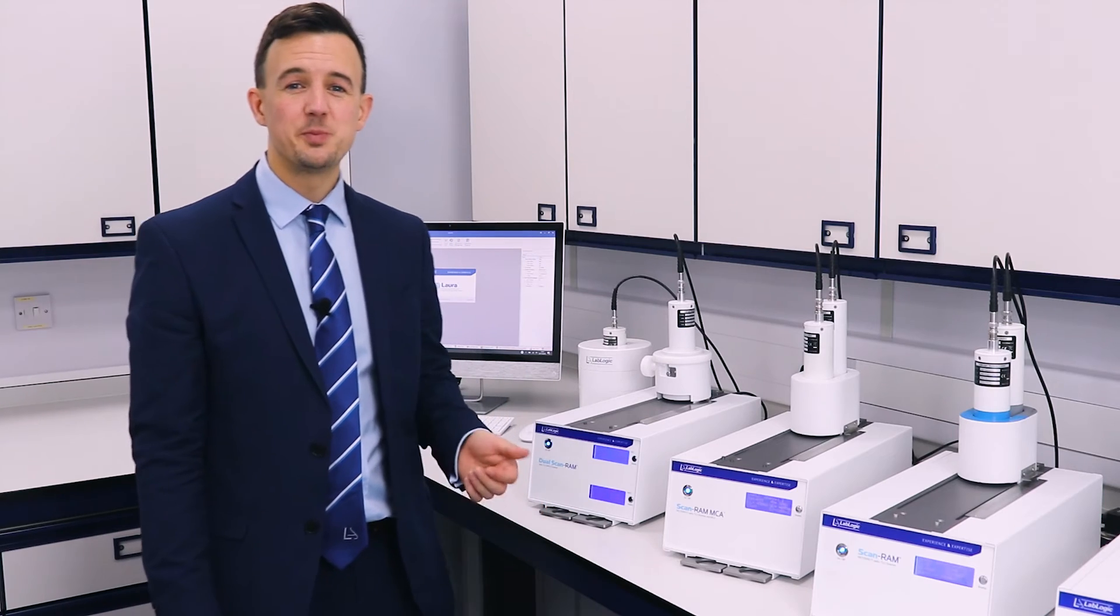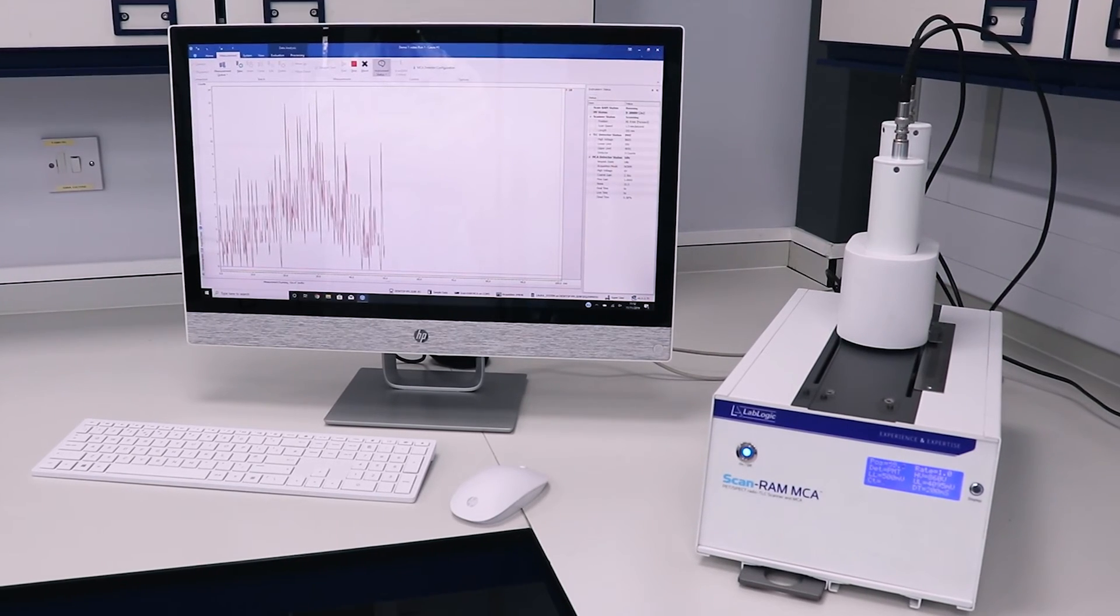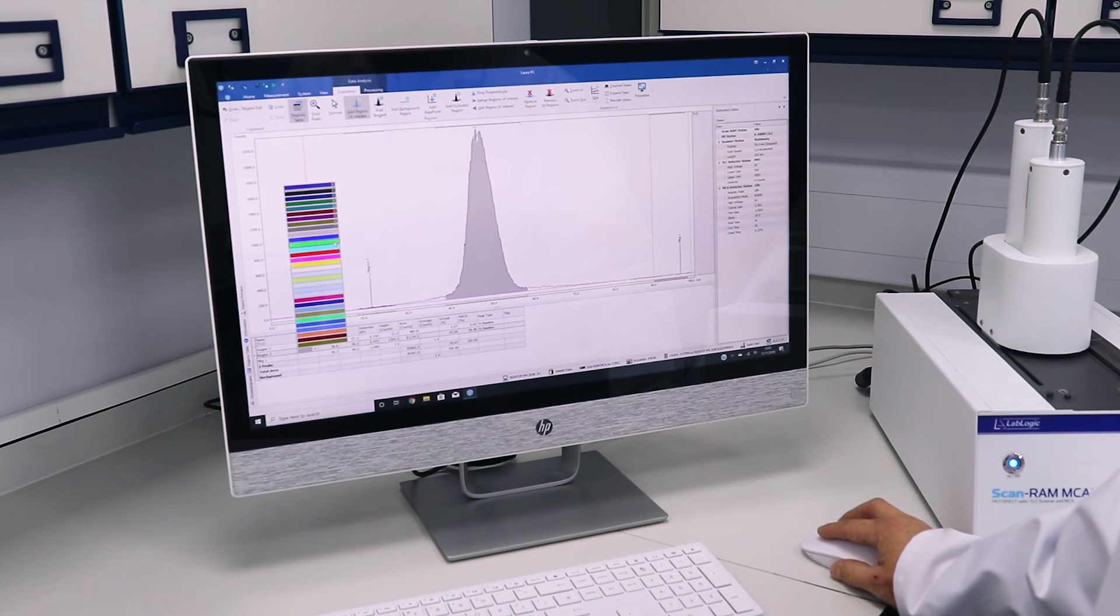The ScanRAM MCA is perfect if you want to combine radiochemical purity and radionuclide identity in one run. This MCA version includes a dedicated detector with a multi-channel analyzer. Once the radio chromatogram has been acquired the MCA detector measures the energy spectrum of the main peak thus confirming the identity of the radionuclide.